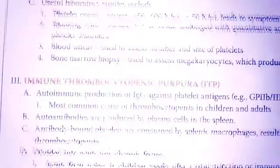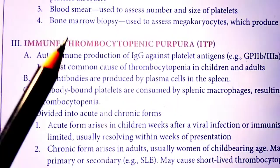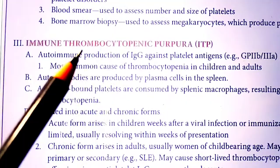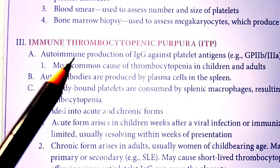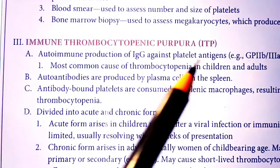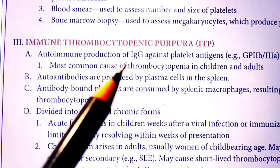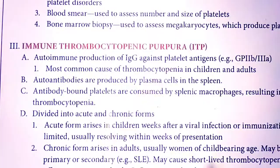Next we discuss immune thrombocytopenic purpura, ITP. Thrombocytopenic means a decrease in the number of thrombocytes, that is, a decrease in platelets. It is an autoimmune condition involving production of IgG against platelet antigens. These auto-antibodies destroy the platelets, leading to ITP.